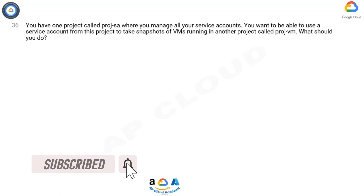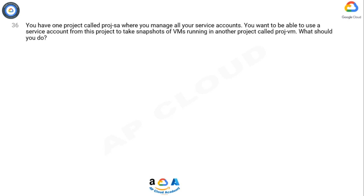You have one project called Project SA where you manage all your service accounts. You want to be able to use a service account from this project to take snapshots of VMs running in another project called Project VM. What should you do?